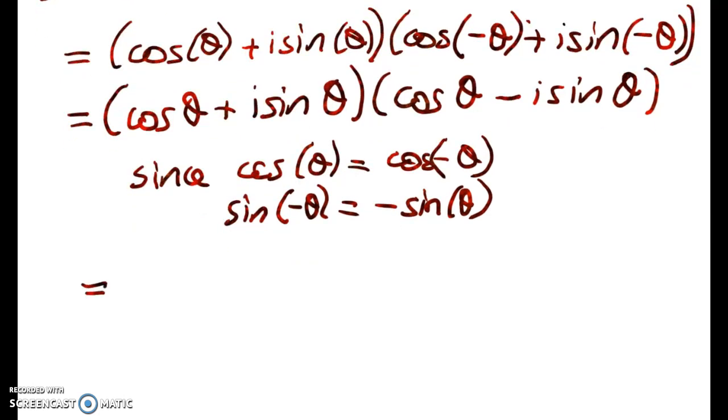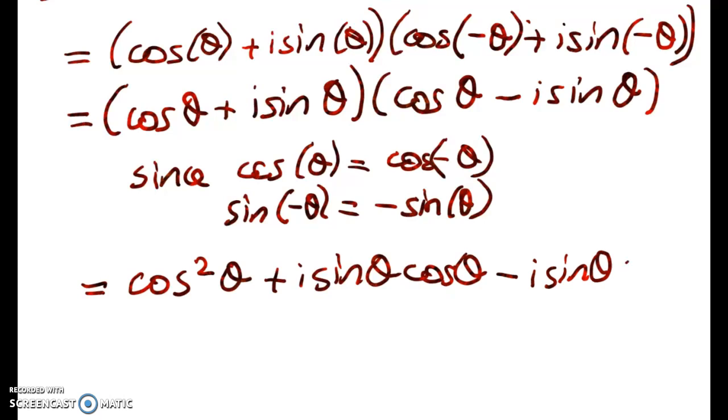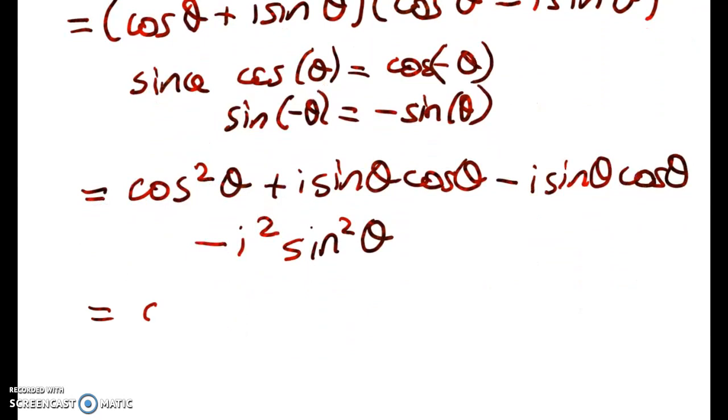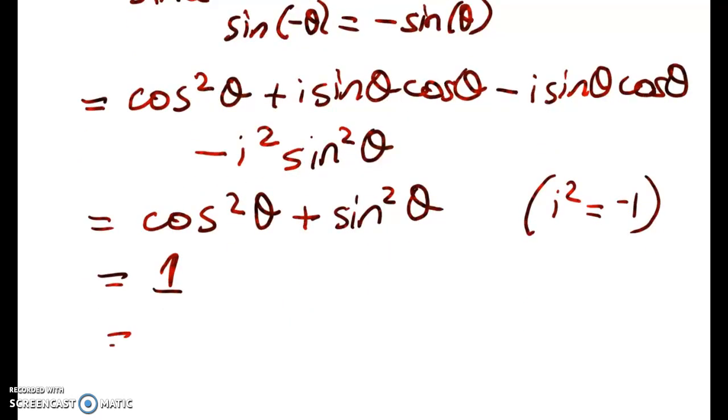Now I've got a quadratic. I'm going to expand the quadratic. So I've got cos squared theta plus i sine theta cos theta minus i sine theta cos theta, and lastly I've got minus i squared sine squared theta. You can see that those two middle terms disappear. That leaves me with cos squared theta plus sine squared theta because i squared is equal to negative one, which is equal to one as required.